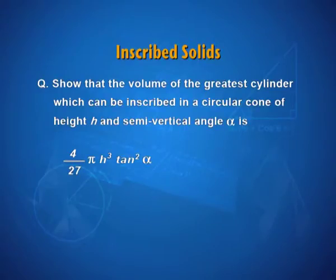Note down the question and as I said earlier, statements are long, but these are the questions from your NCERT textbook. The question says, show that the volume of the greatest cylinder, which can be inscribed in a right circular cone of height h and semi vertical angle α is 4/27 π h³ tan² α.